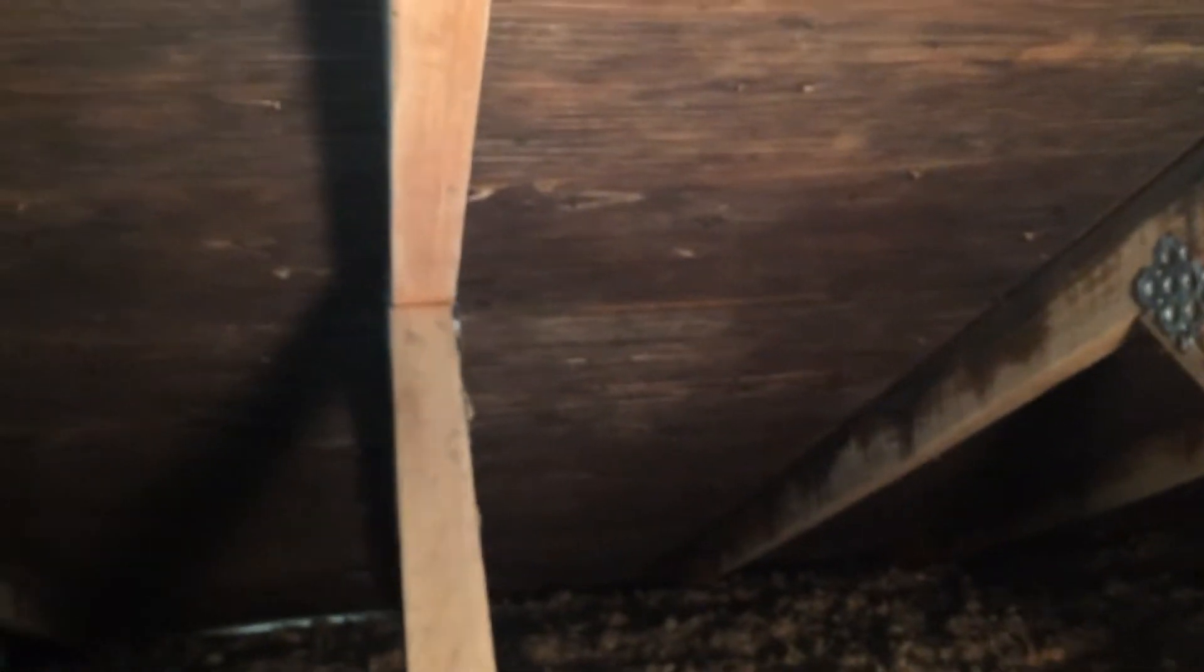That home inspector went in the attic space and notated that there was possible mold growth or a mold-like substance on the plywood sheathing and the rafters in this attic space. Now this is a truss roof, which means that there are engineered rafters.